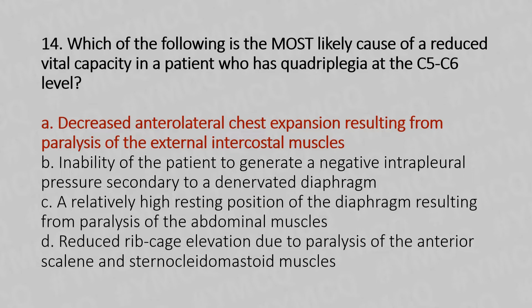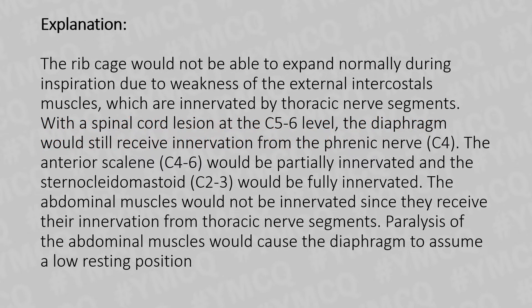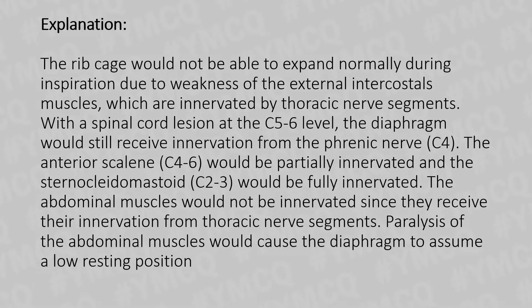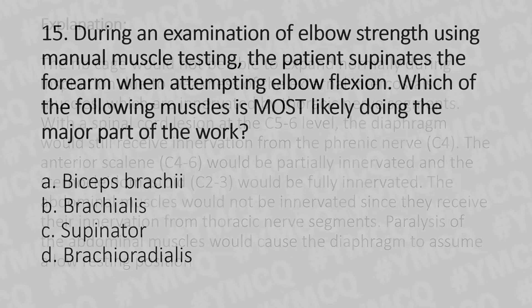The answer is Option A: decreased anterior-lateral chest expansion resulting from paralysis of the external intercostal muscles. The ribcage would not be able to expand normally during inspiration due to weakness of the external intercostal muscles, which are innervated by thoracic nerve segments. With a spinal cord lesion at C5-C6, the diaphragm would still receive innervation from the phrenic nerve at C4. The anterior scaleni (C4-C6) would be partially innervated, and the sternocleidomastoid (C2-C3) would be fully innervated. The abdominal muscles would not be innervated since they receive innervation from thoracic nerve segments, and their paralysis would cause the diaphragm to assume a low resting position.